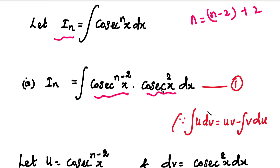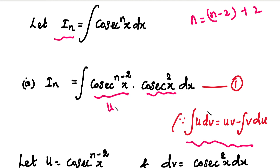So cosecant power n x equals cosecant power (n minus 2) x into cosecant squared x. We apply the integration by parts formula. The integration by parts formula is: the integral of U dv equals U·V minus the integral of V·dU. We set U equal to cosecant power (n minus 2) x, and dv equals cosecant squared x dx.